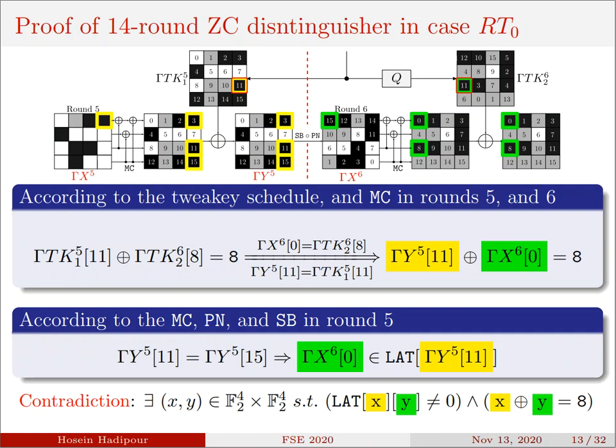Therefore, these relations between the cells of tweak's mask that were derived in the previous slide can be converted to these relations between active cells in linear masks of internal state somewhere before and after the S-box layer of round 5. On the other hand, ΓY5[11] and ΓY6[0] are the input and output linear masks of the same S-box respectively. Therefore, there must exist a pair (x,y) satisfying the linear approximation table of S-box such that the XOR of x and y equals 8 as well. However, referring to the linear approximation table of CRAFT's S-box, one can see that there is not such a pair. And this is a contradiction.